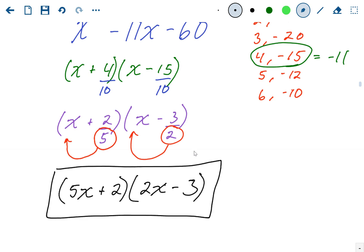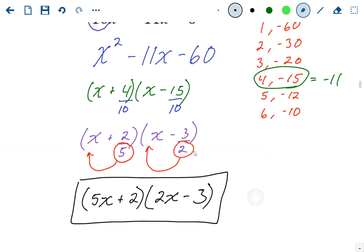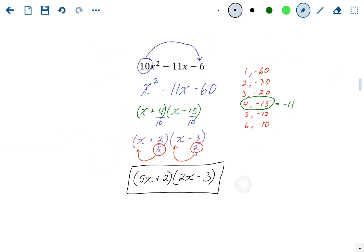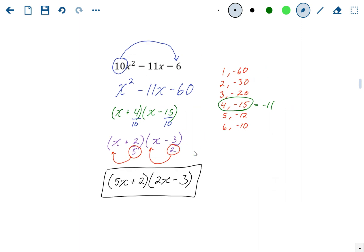And of course, you'd always check your answer by multiplying those two. And you should get the original, what we came out with. So that's another one of swing method.